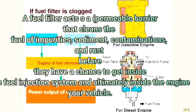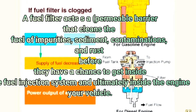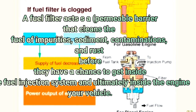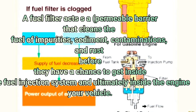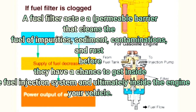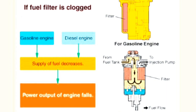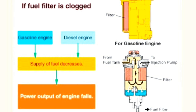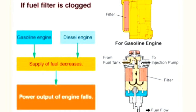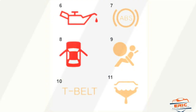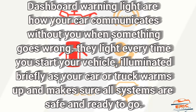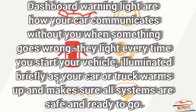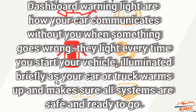We take a look at dashboard warning lights — how they illuminate and what to do when these lights appear on your dashboard. We have the oil light, ABS, and these are the things you need to know. Dashboard warning lights are how your car communicates with you when something goes wrong. The lights illuminate briefly every time you start your vehicle as your car warms up and makes sure all systems are safe to go. We have brake light, door light, water temperature light, airbag, and more.